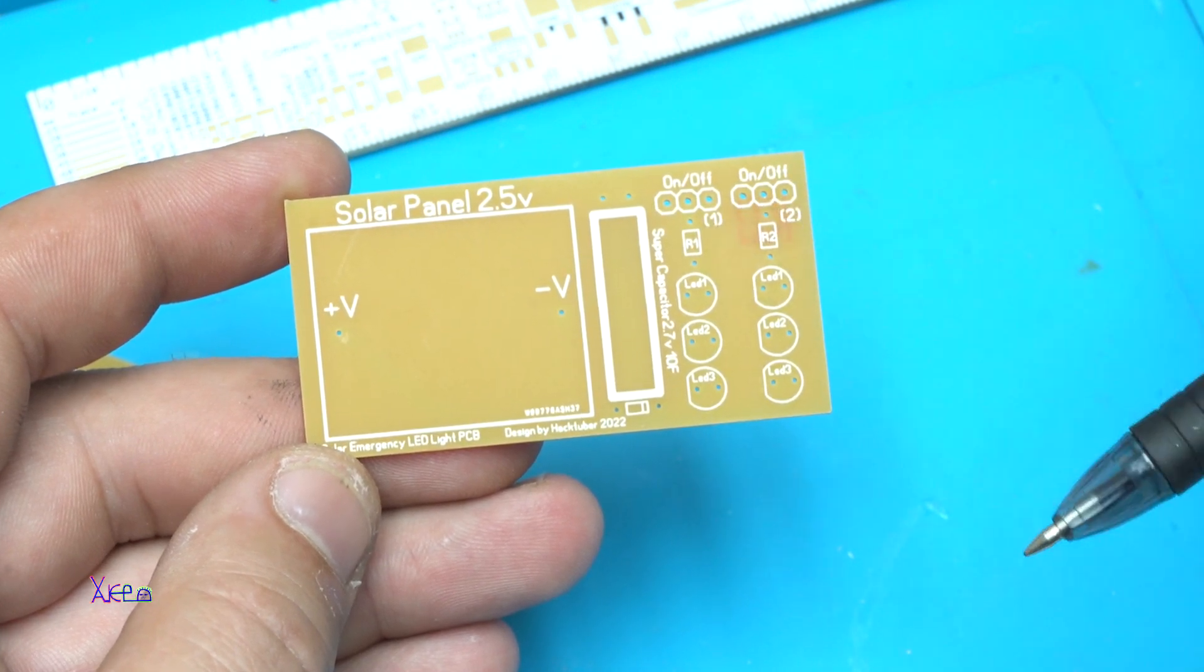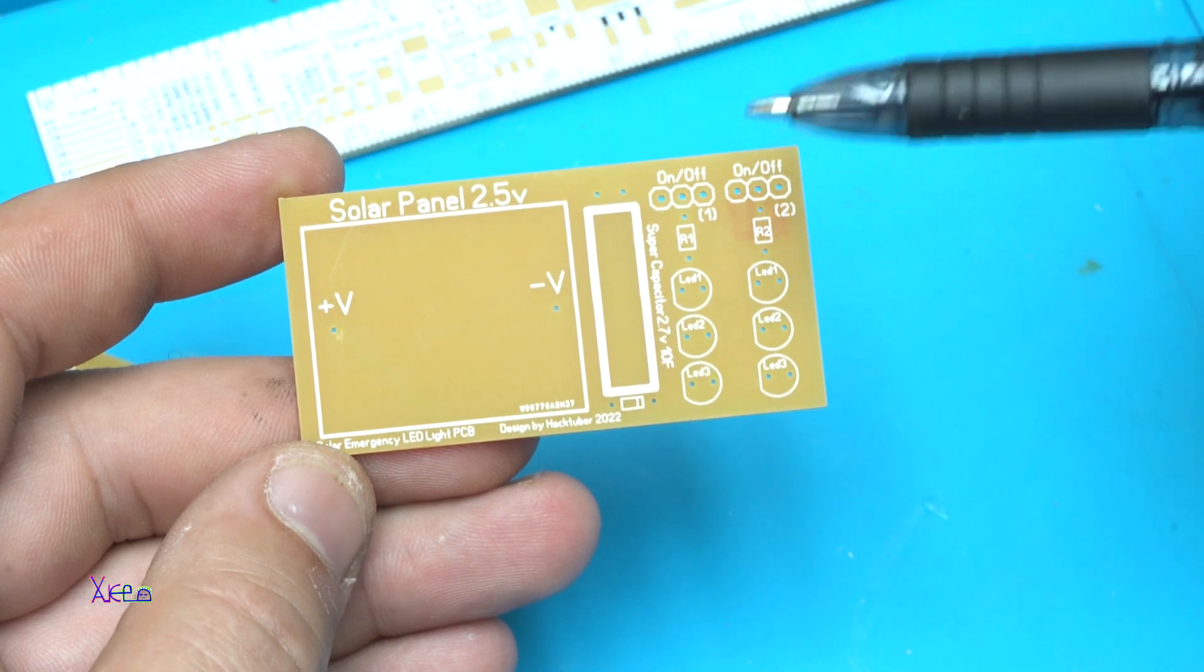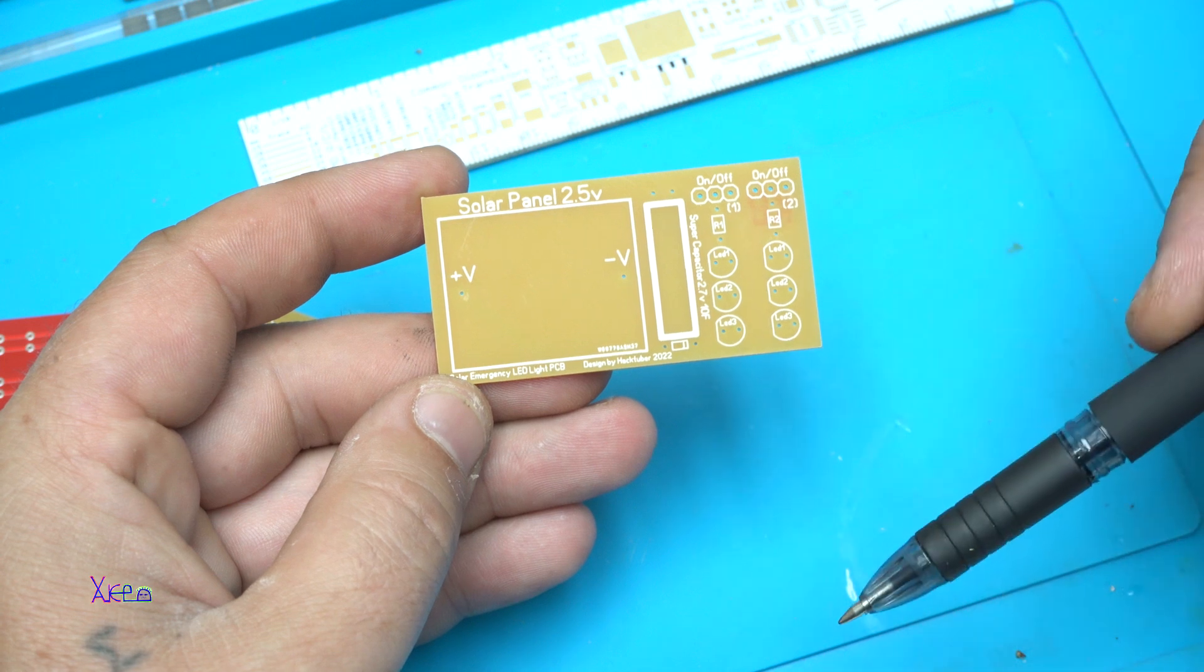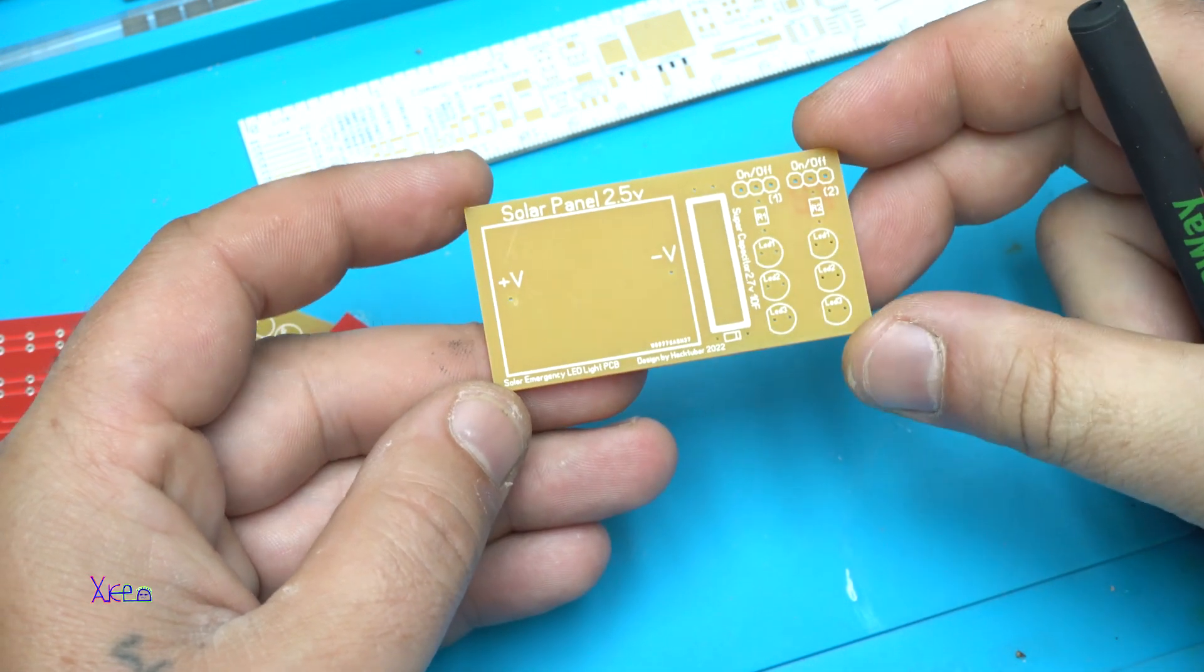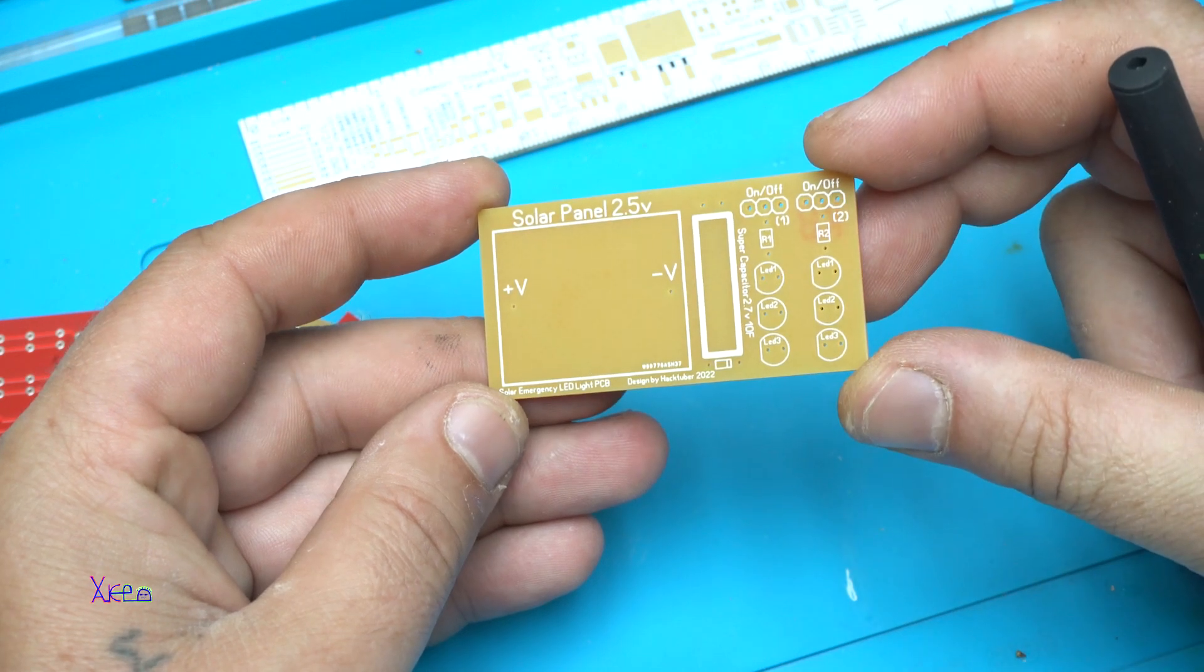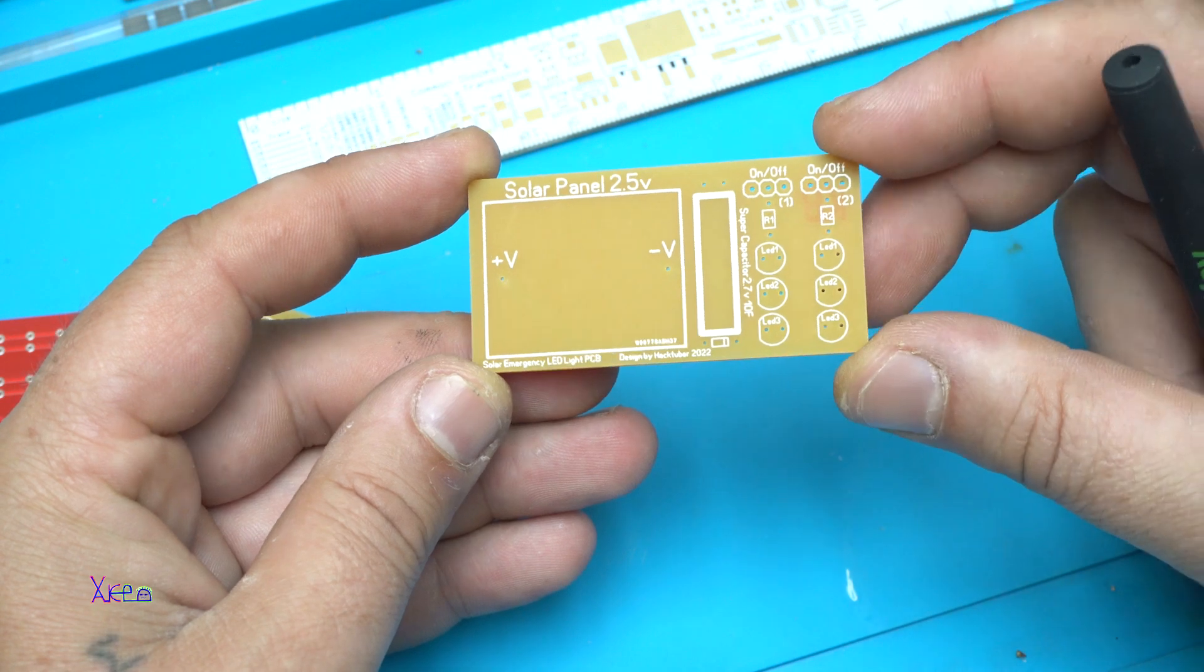Two resistors that you need to pick up for the brightness of the LED and I have one row for yellow and second row for white and this will be emergency LED light PCB board.